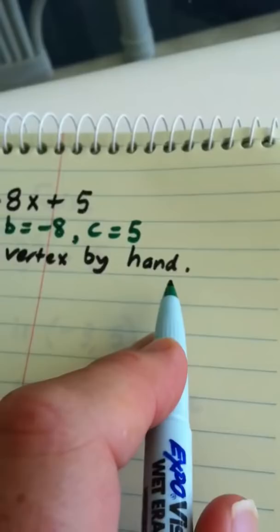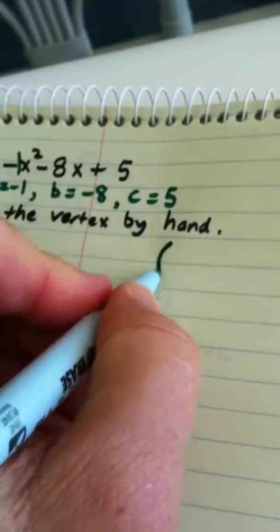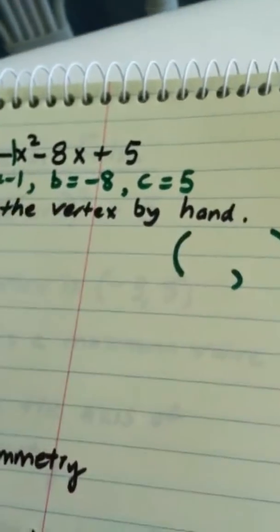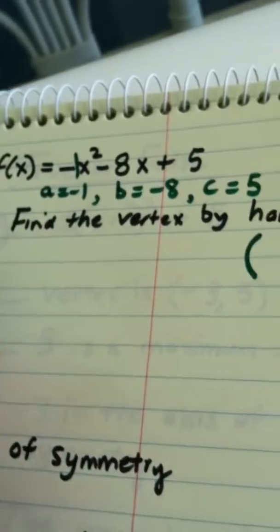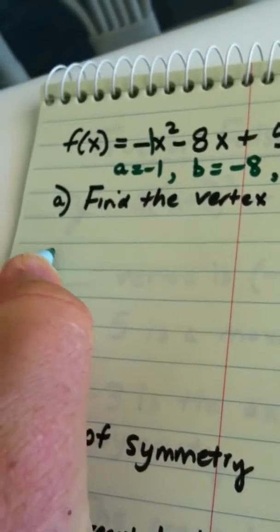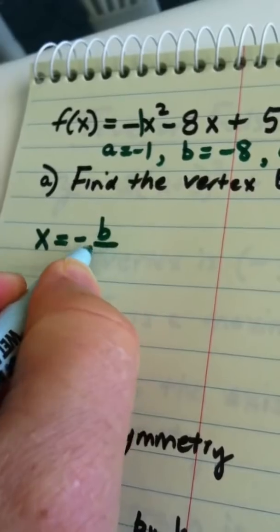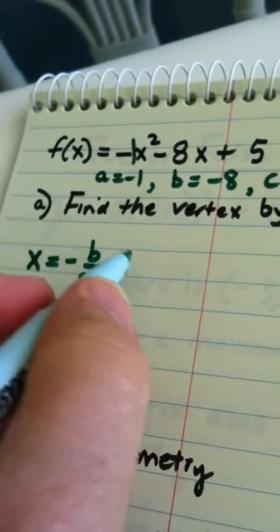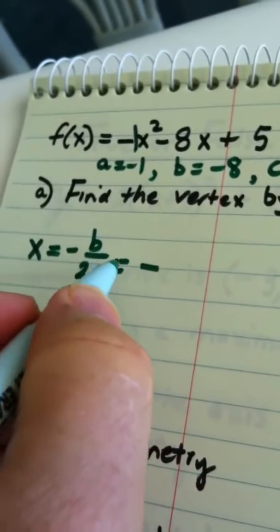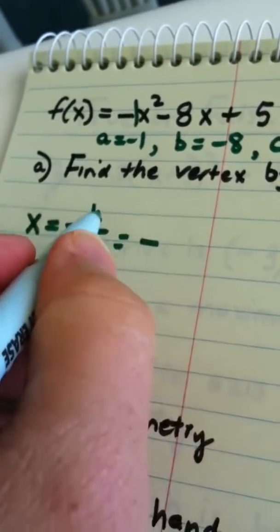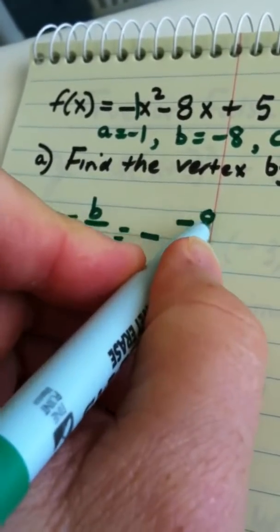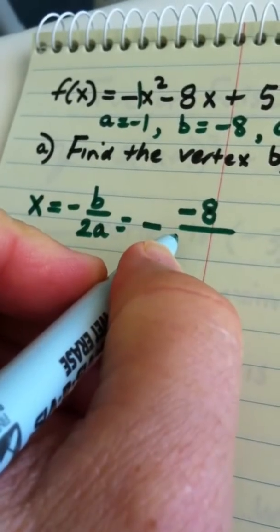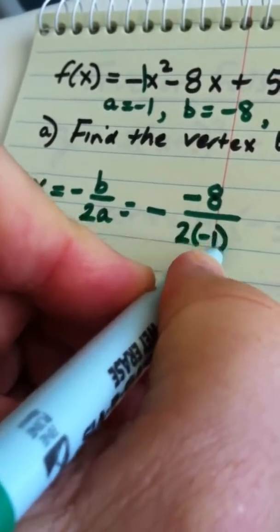If we're asked to find the vertex by hand, we recall the vertex formula. The vertex formula tells me that x is equal to the opposite of b over 2a, you need to commit that fact to memory. That's the opposite of, that's part of the formula, b is a negative 8 and a is a negative 1.